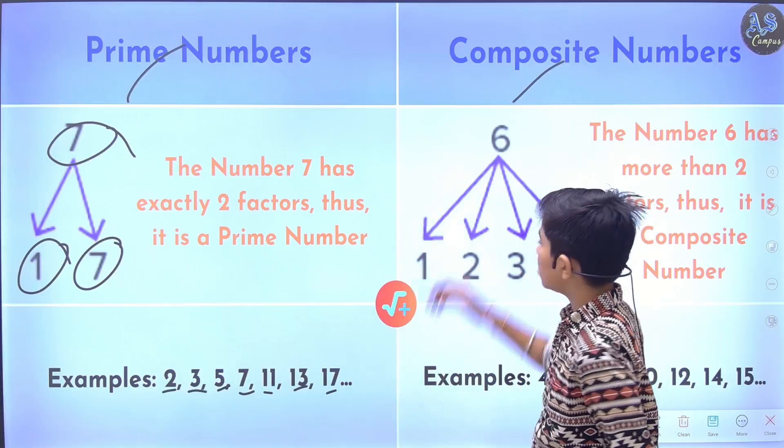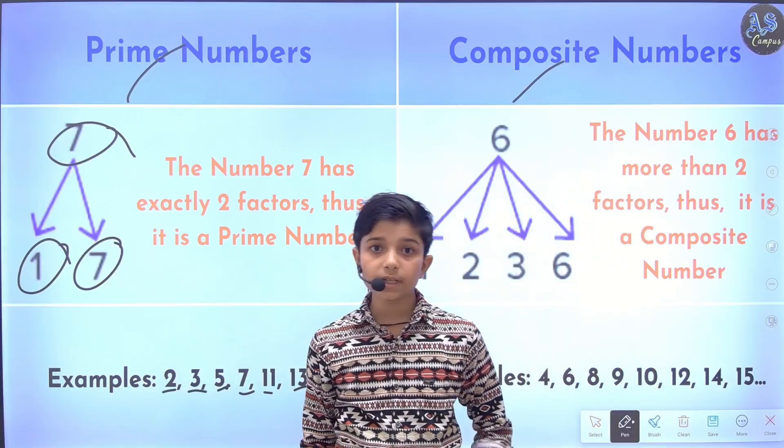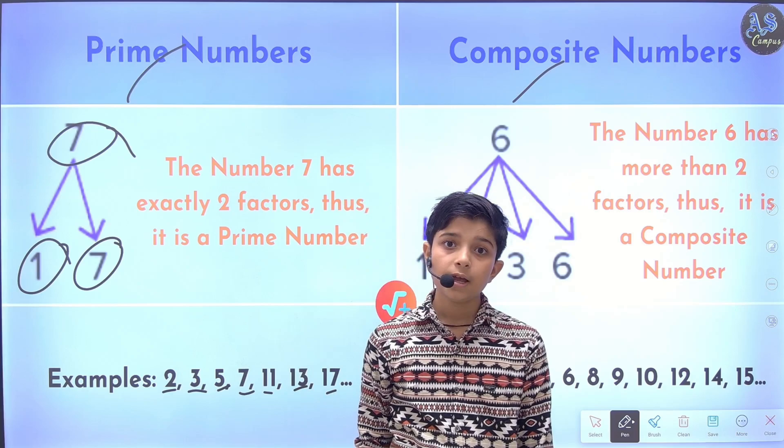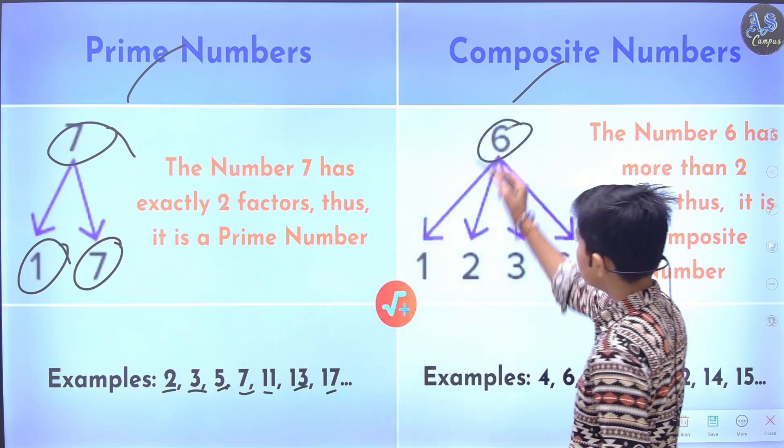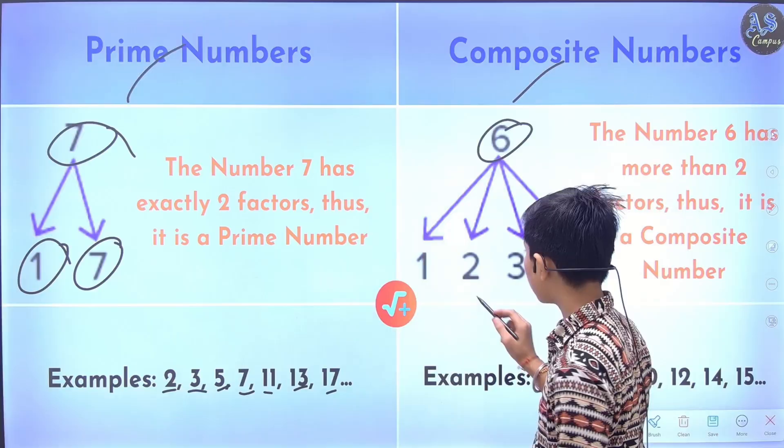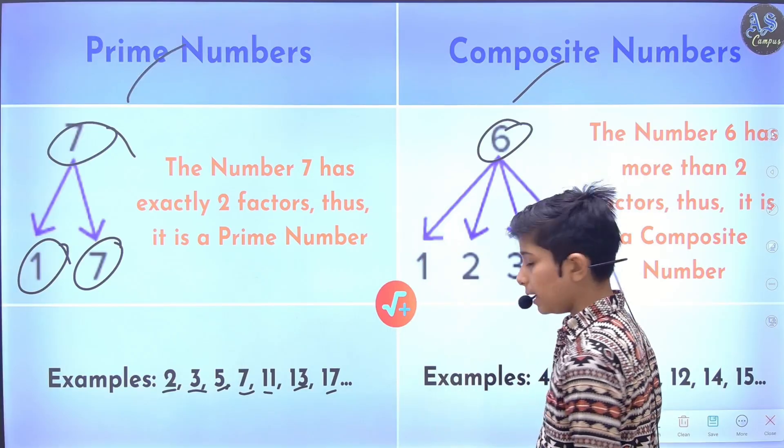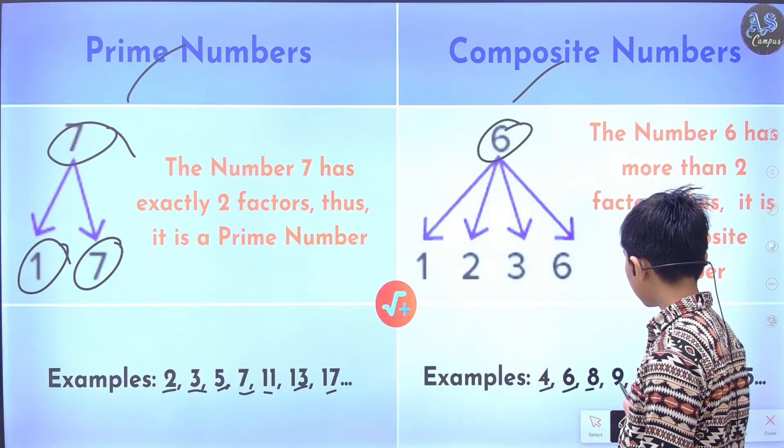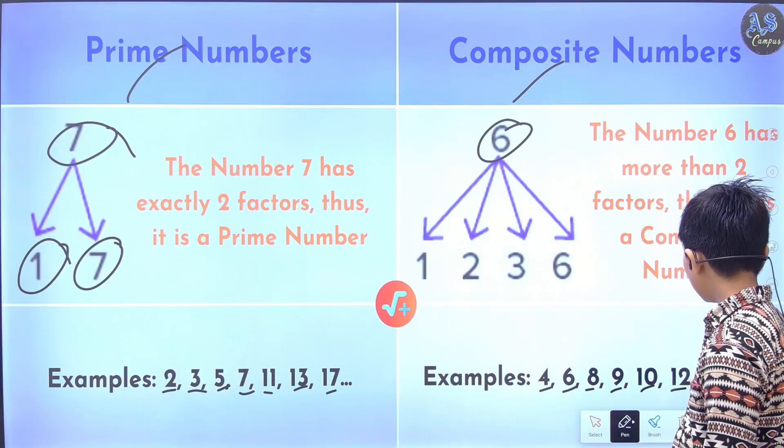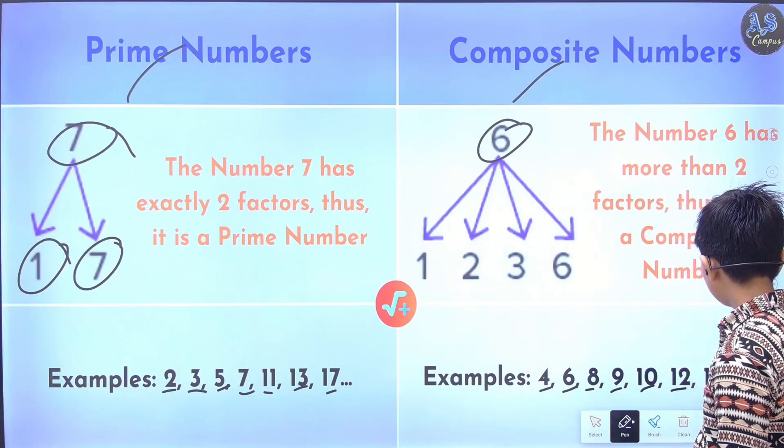Composite numbers: A number which has more than two factors is called composite number. Like 6, 6 has four factors, so this is an example of composite number. There are many examples given below like 4, 6, 8, 9, 10, 12, 14, 15.